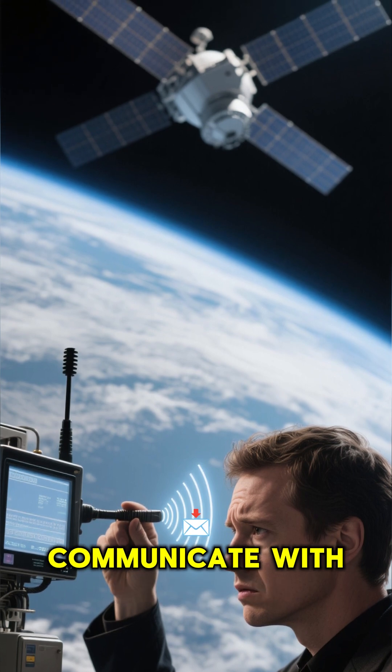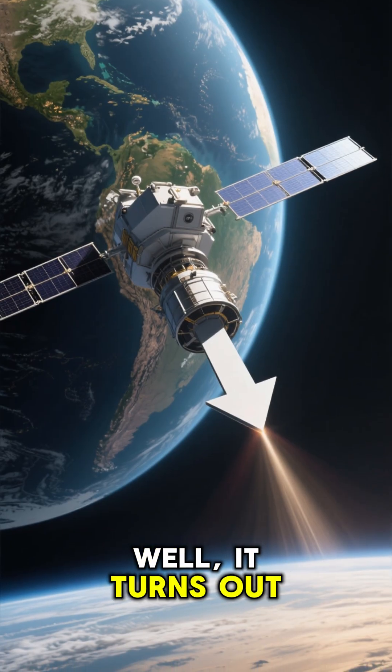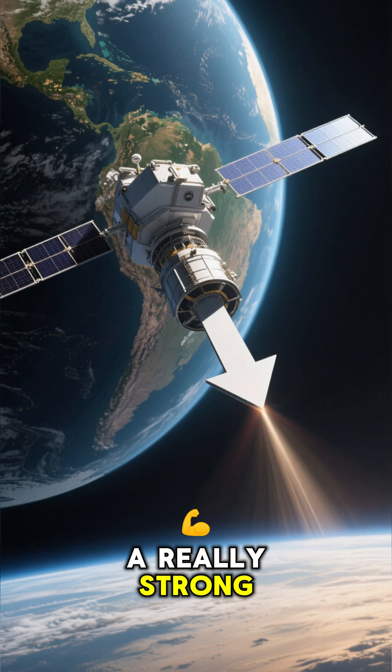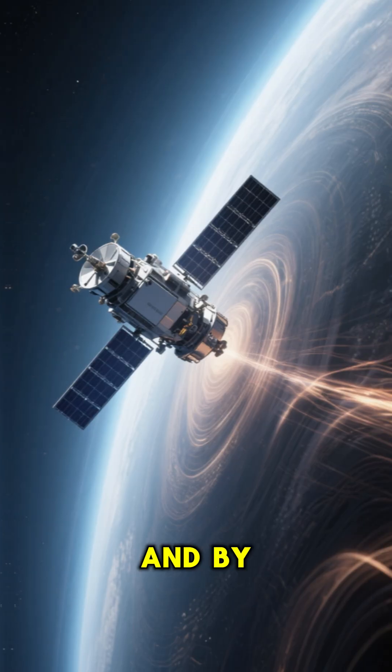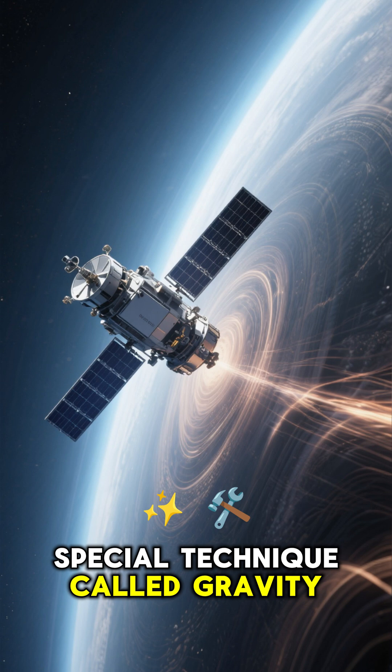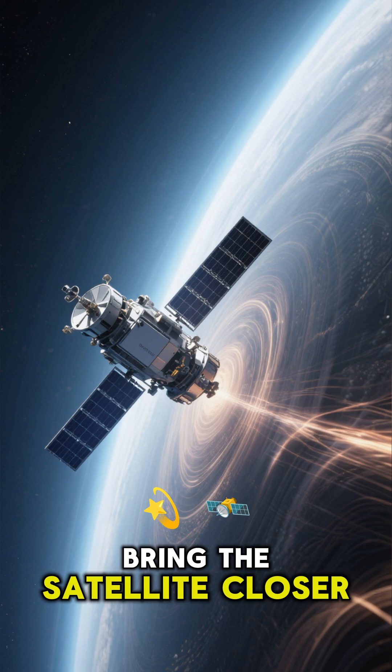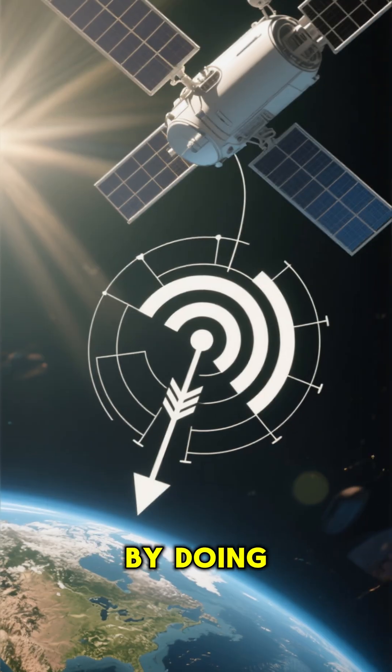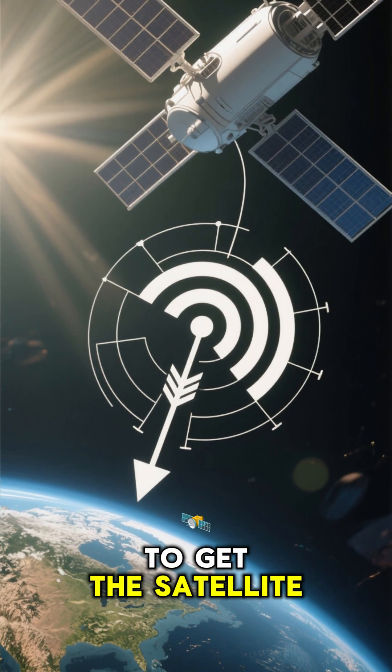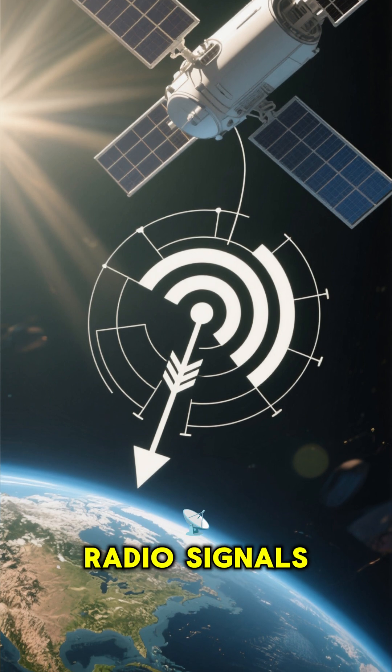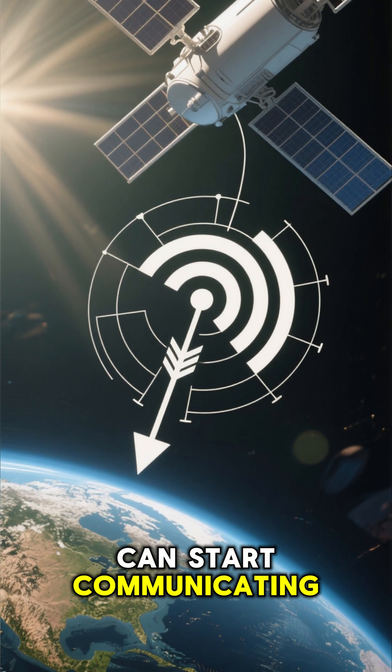So how does NASA communicate with it? Well, it turns out that the Earth has a really strong gravitational pull, and by using a special technique called gravity assist, NASA can actually use the Earth's gravity to bring the satellite closer to us. By doing so, they're able to get the satellite within range of our radio signals, and we can start communicating with it.